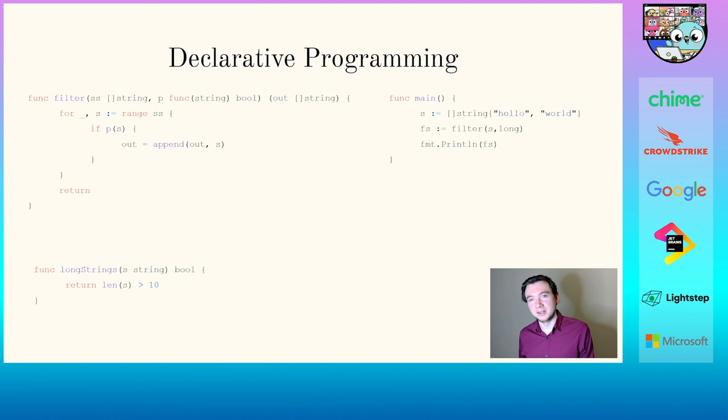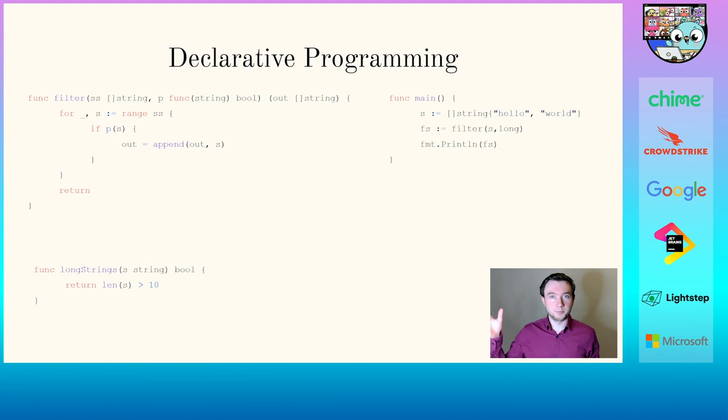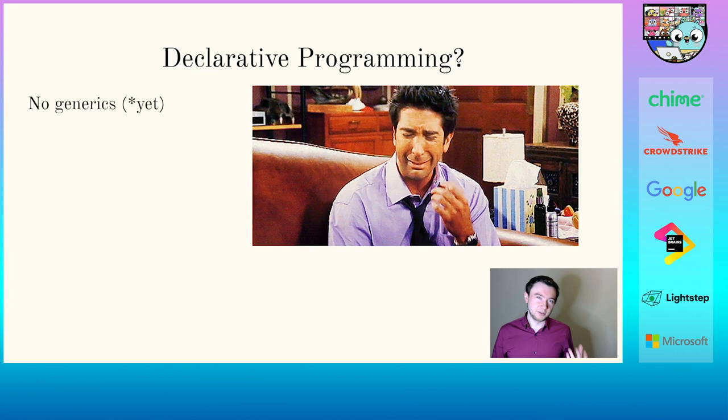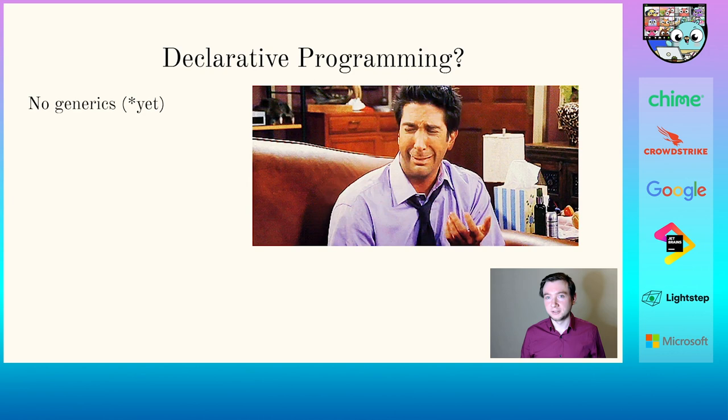Remember that earlier we took a look at how you filter your data using a function — meaning we change the behavior of the filter function depending on what we pass to it. That's the idea of declarative programming. But we don't have generics yet in Go, so if you want a really generic function for filter, that's not possible. We have a kind of flexible predicate, but the input slice will always be a slice of strings.